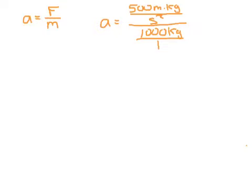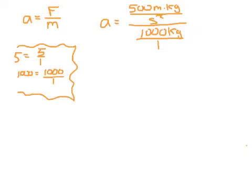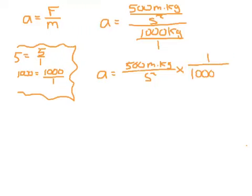1,000 kilograms is the same as 1,000 kilograms over one. Any number is itself over one. And so, for example, this is just a side example here, just to show you, 5 is the same as 5 over one. 1,000 is equal to 1,000 over one. And I do this because I say, remember, dividing by something is the same as multiplying by the reciprocal. So what I can do is I can go acceleration is equal to 500 meters times kilograms per second squared times 1 over 1,000 kilograms. So I've taken the reverse. I've flipped it. I've multiplied by the reciprocal.